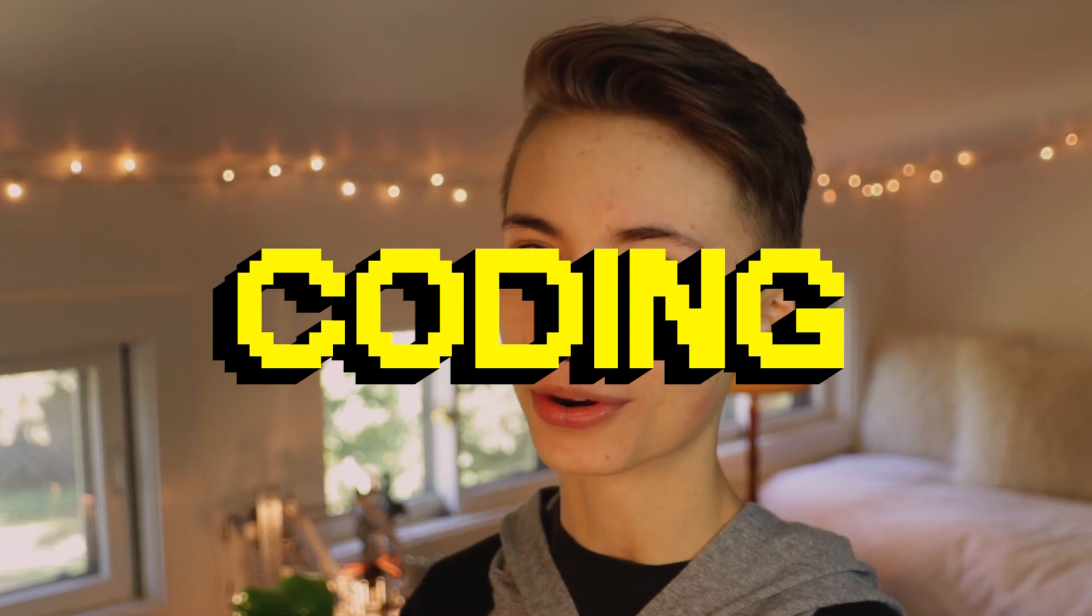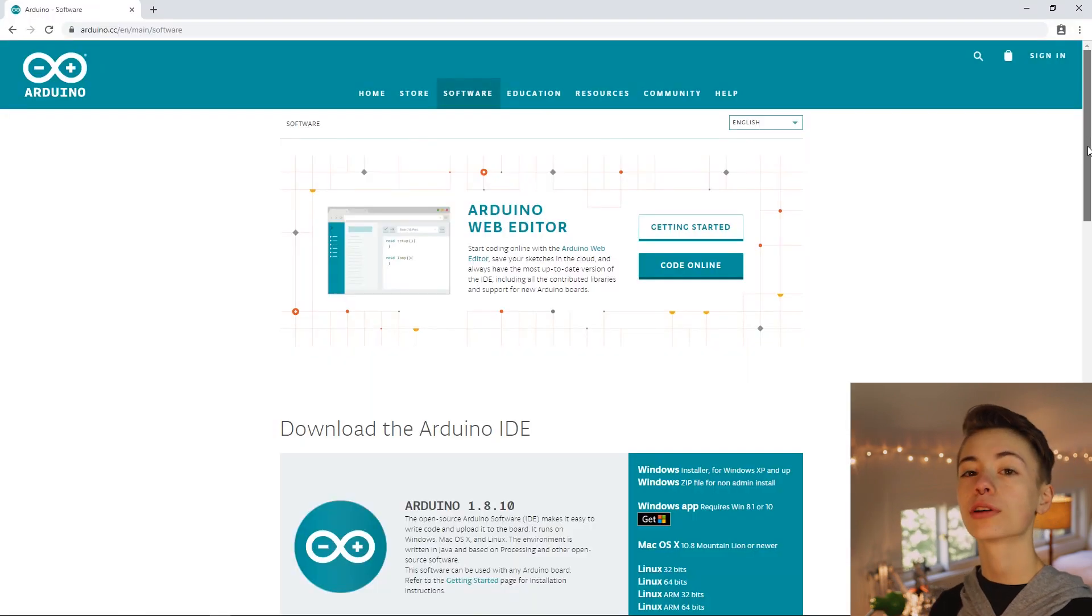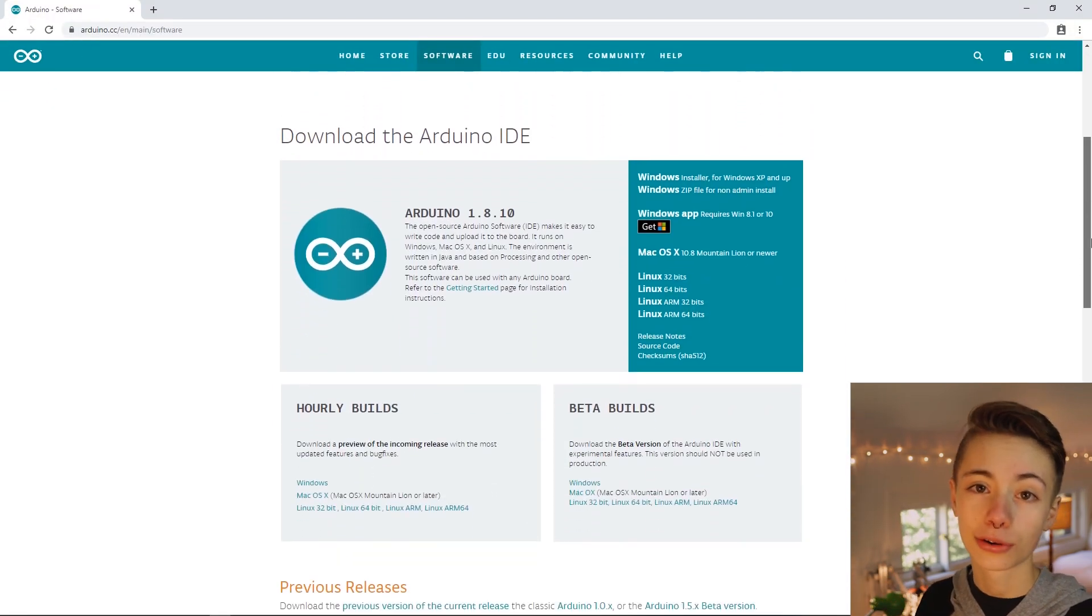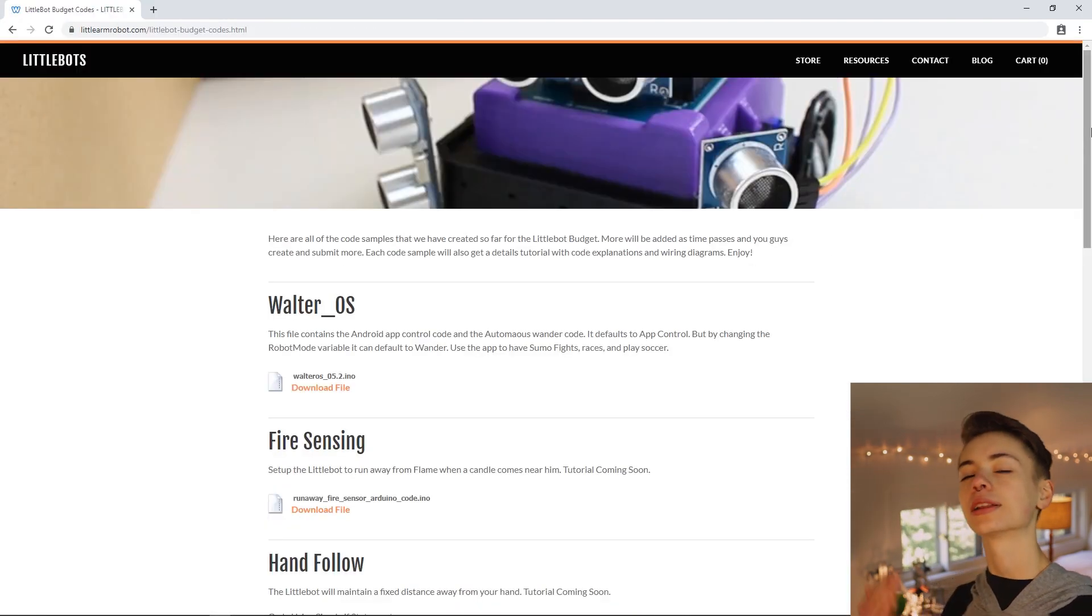I do declare it's time to code! Here's what you need to code Little Bot: the Arduino IDE, which should already be installed if you're in Nerdy Girls, but if you're rogue there's a link in the description to download it. Next, an Android phone with the somewhat buggy Little Bot app installed, and finally, the code to make Little Bot come alive. Little Bot's code has already been written for us, so all we need to do is download it and load it up.